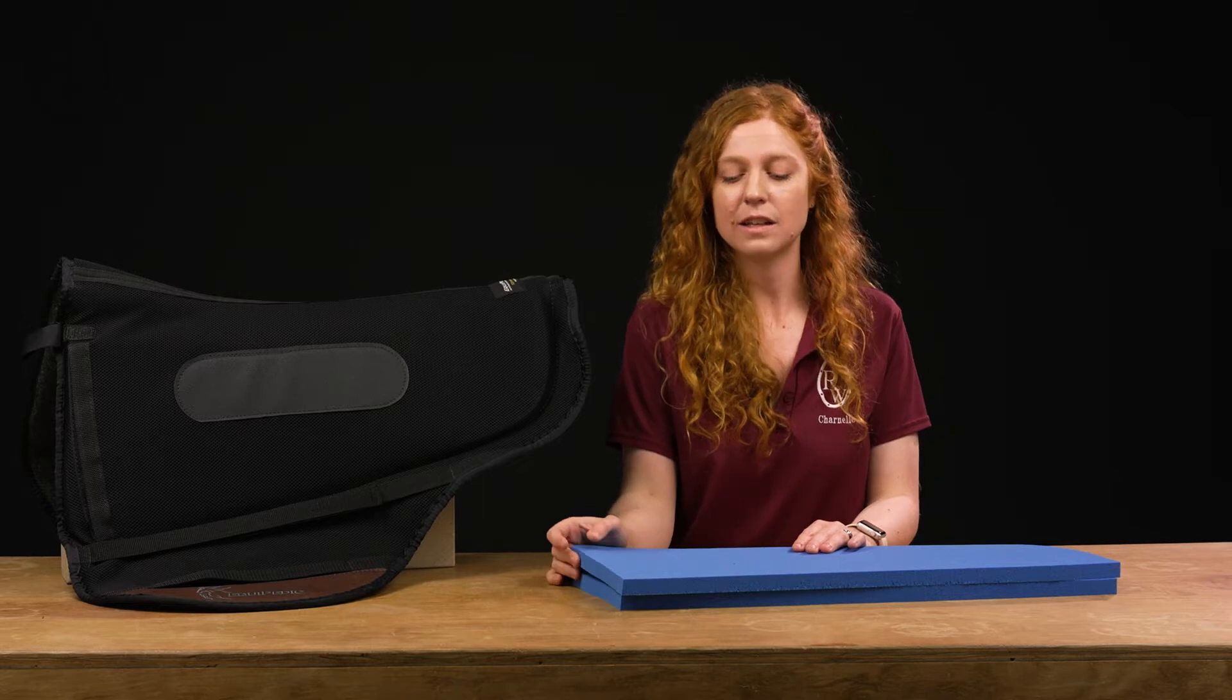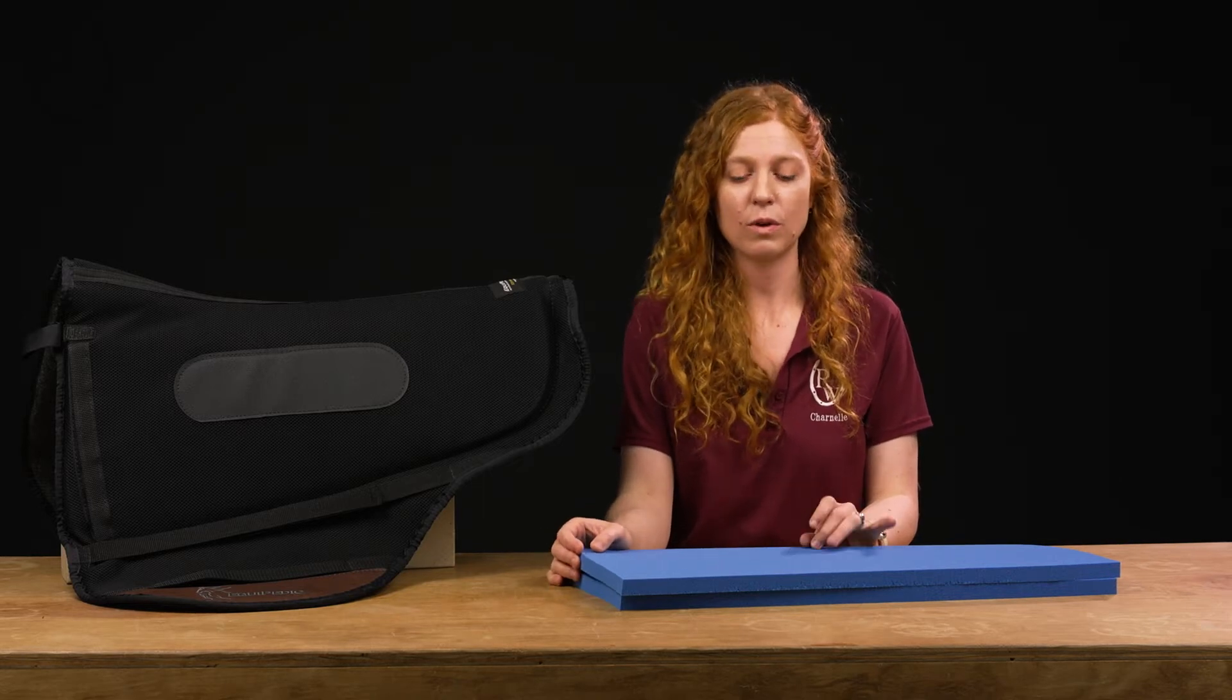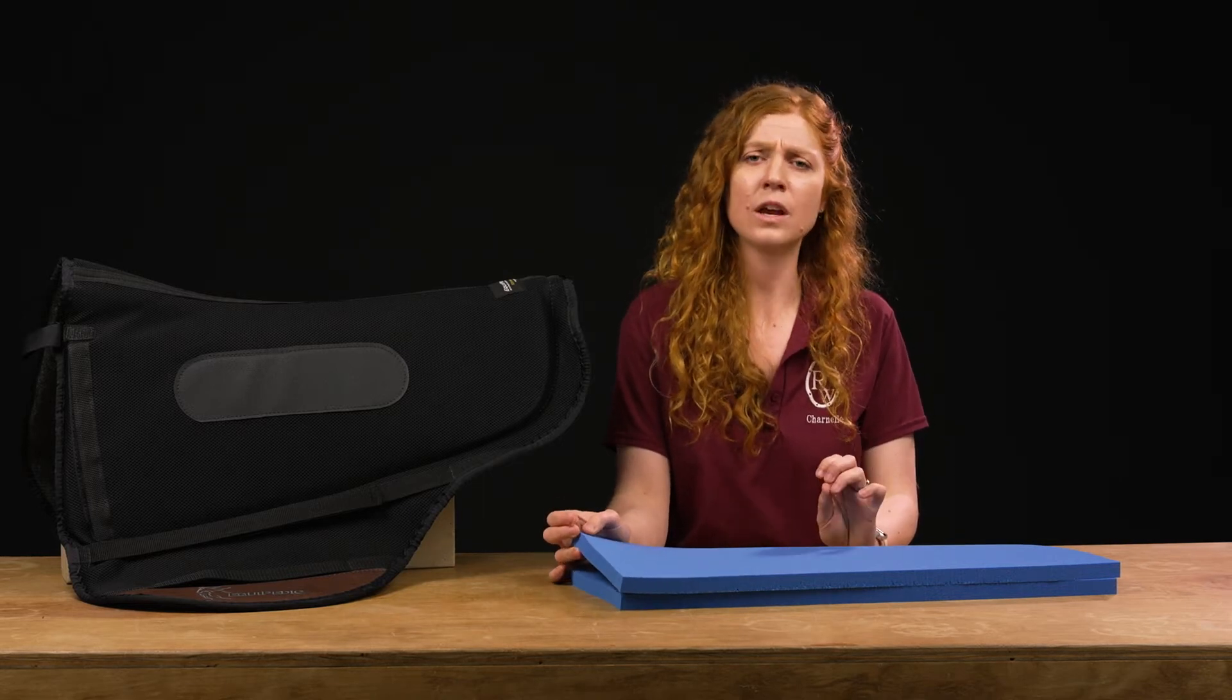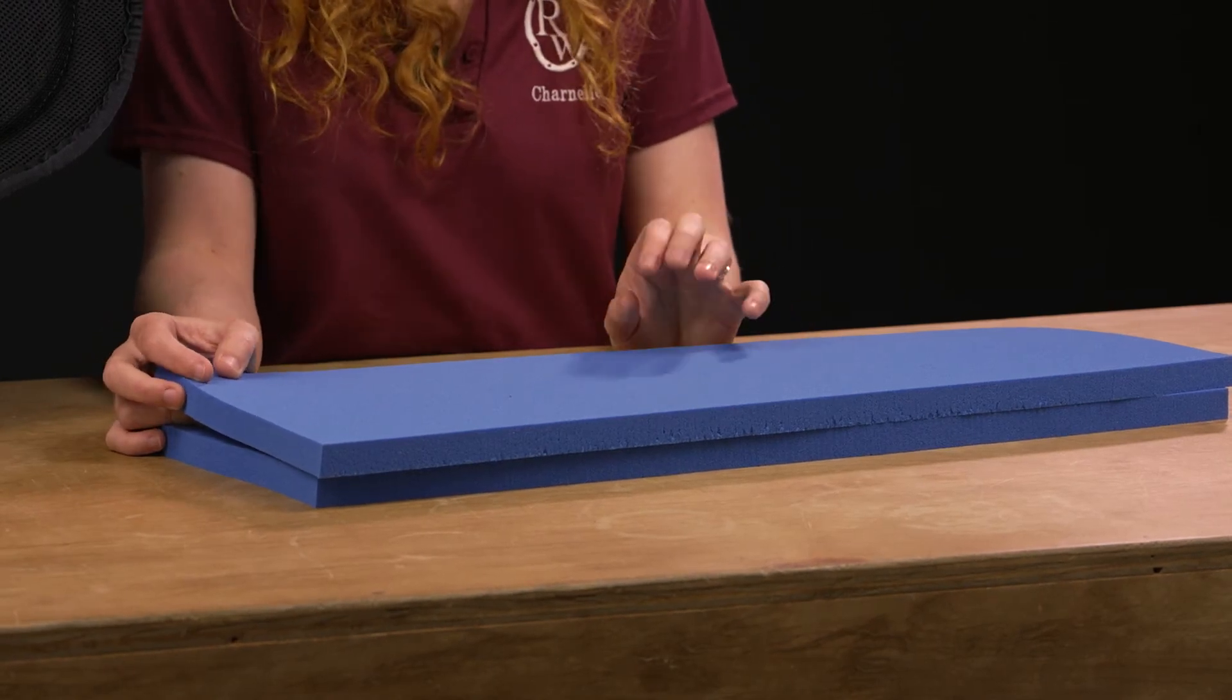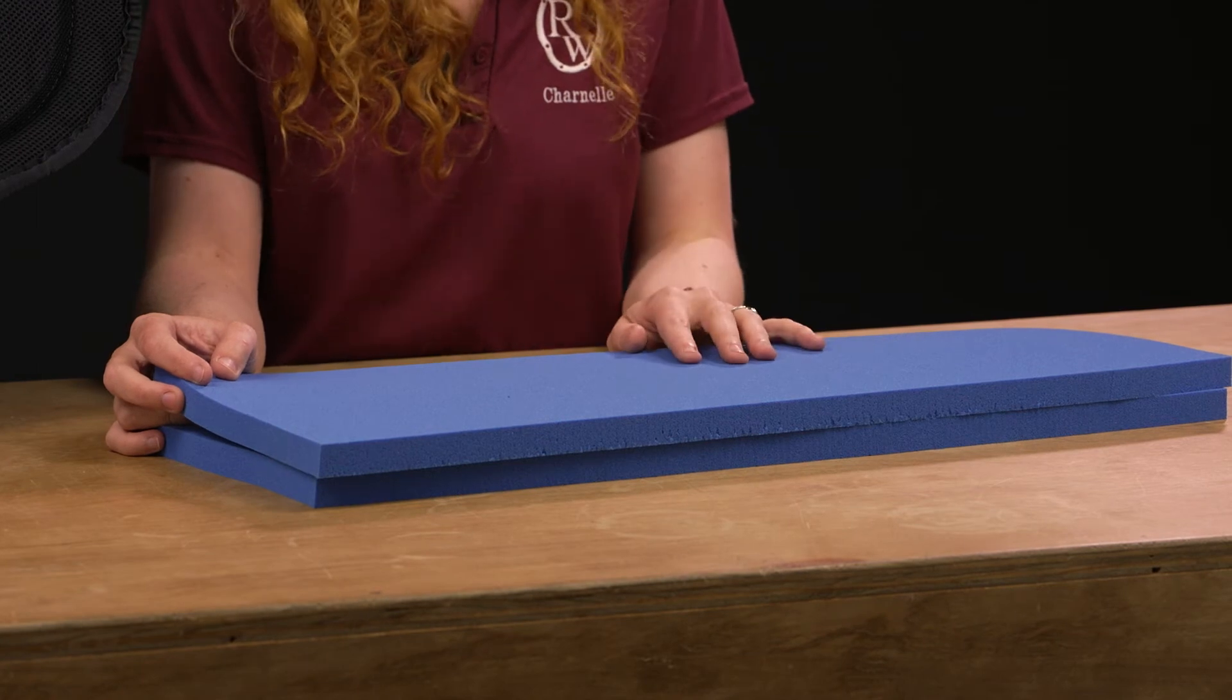So first off, these inserts are three-quarter inch thick, they are very breathable and moisture wicking, so they help prevent any unnecessary heat buildup on your horse's back.